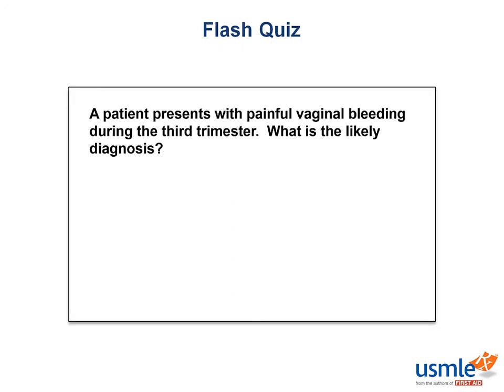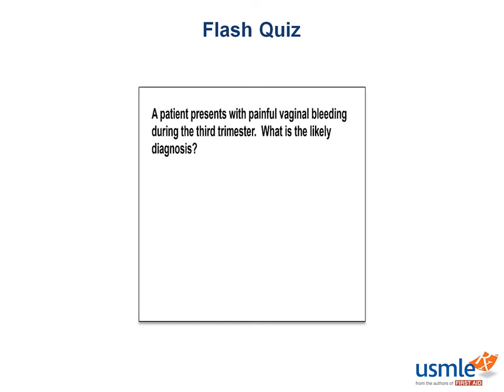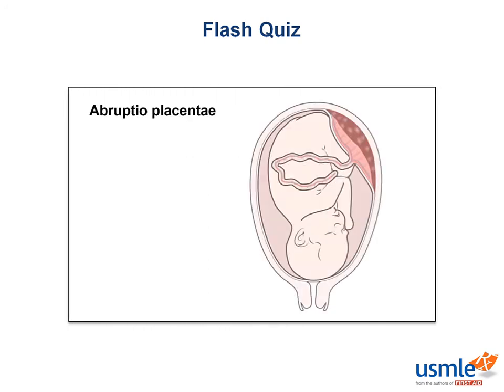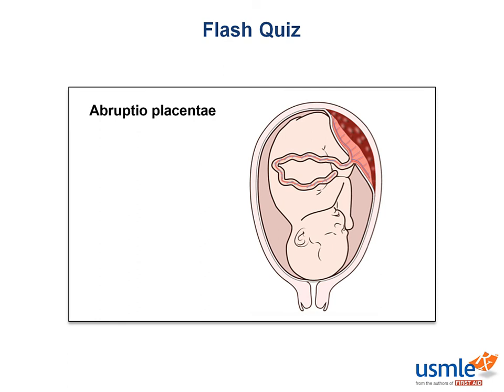Flash quiz: A patient presents with painful vaginal bleeding during the third trimester. What is the likely diagnosis? The answer is abruptio placentae. Remember, painful bleeding is indicative of abruption, whereas painless bleeding would be more indicative of placenta previa.